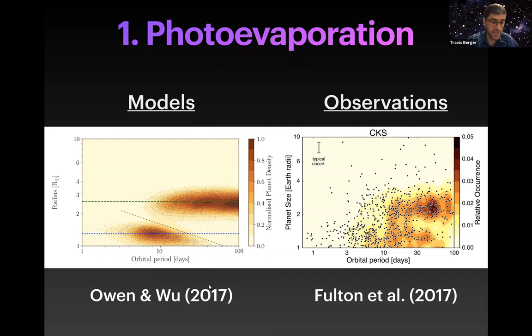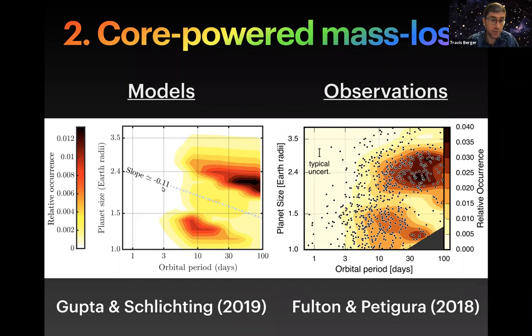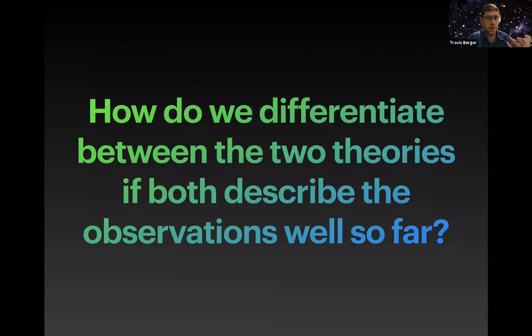Comparing the models to observations: photo evaporation models from Owen and Wu 2017, showing planet radius versus orbital period — darker colors indicate higher relative occurrences — show qualitative agreement with the observations from Fulton et al. 2017 in this region of parameter space. Similarly, core-powered mass loss models from Gupta and Schlichting 2019 also show relatively good qualitative agreement with the observations. This leads to the question: how would we differentiate between these two theories if both describe the observations well? Options include more precise stellar properties, more planets, or exploring different areas of parameter space.